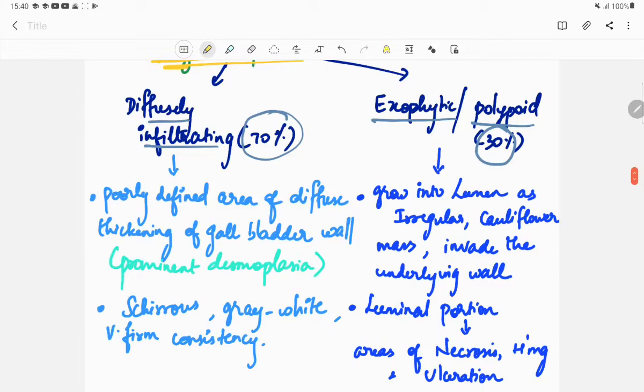In the diffusely infiltrating type, it involves poorly defined area of diffuse thickening of gallbladder wall. There is prominent desmoplasia in diffusely infiltrating gallbladder carcinoma, and this is grayish white and very firm in consistency.